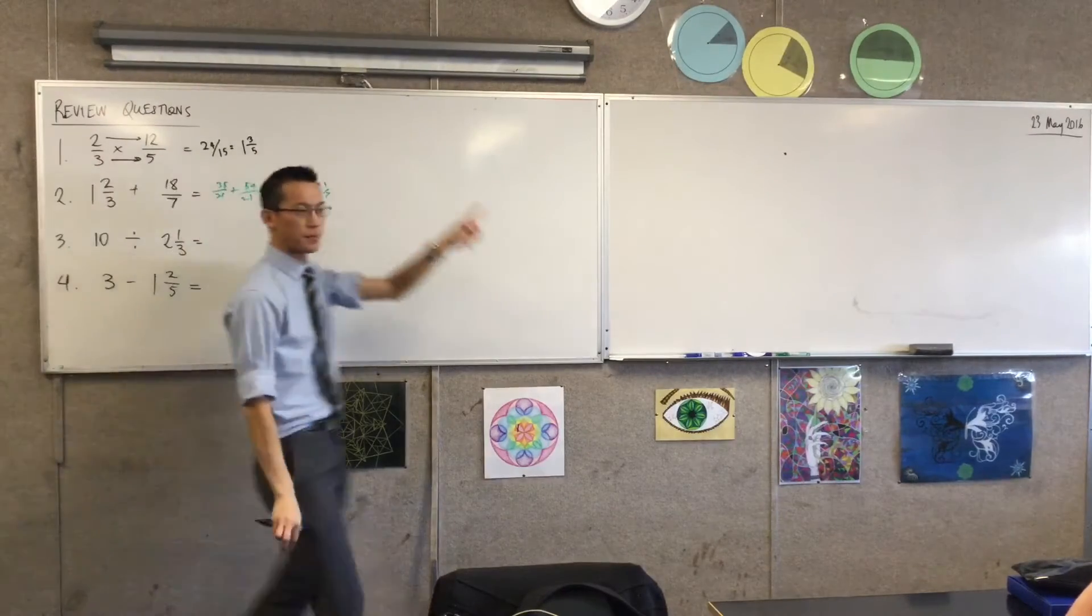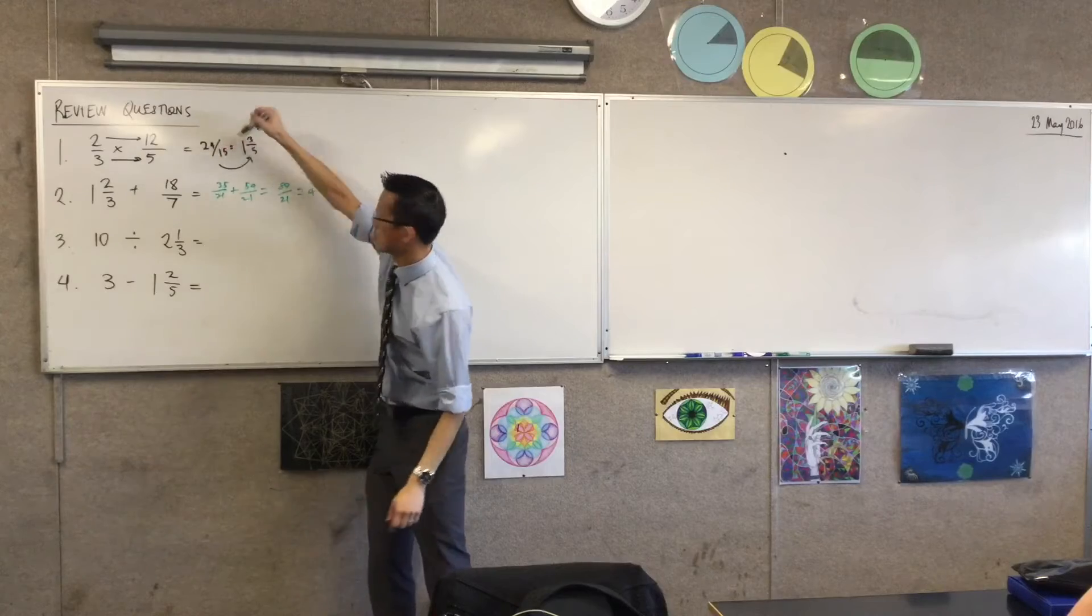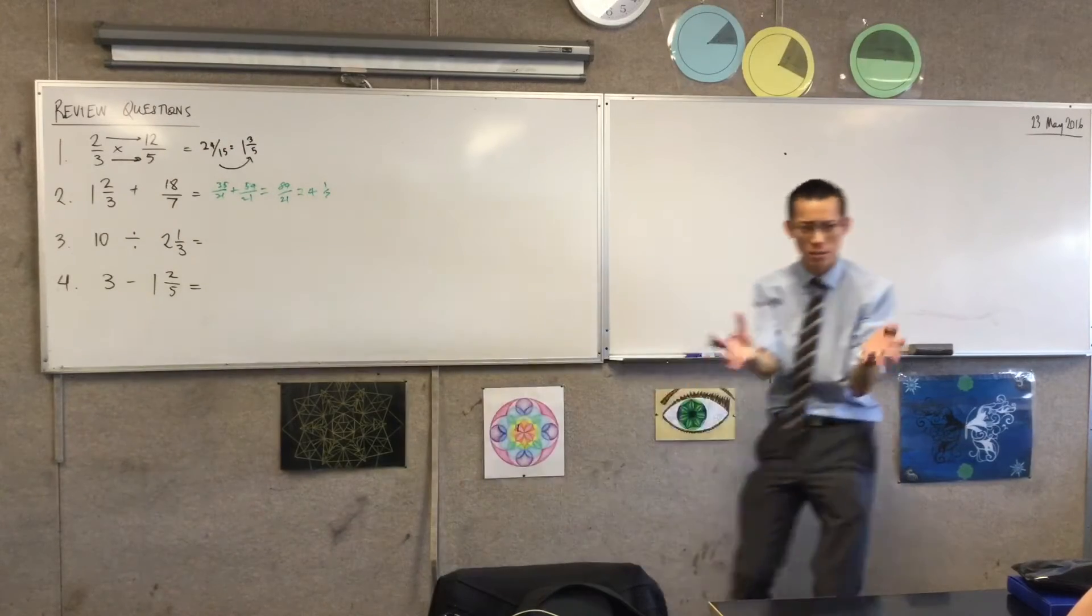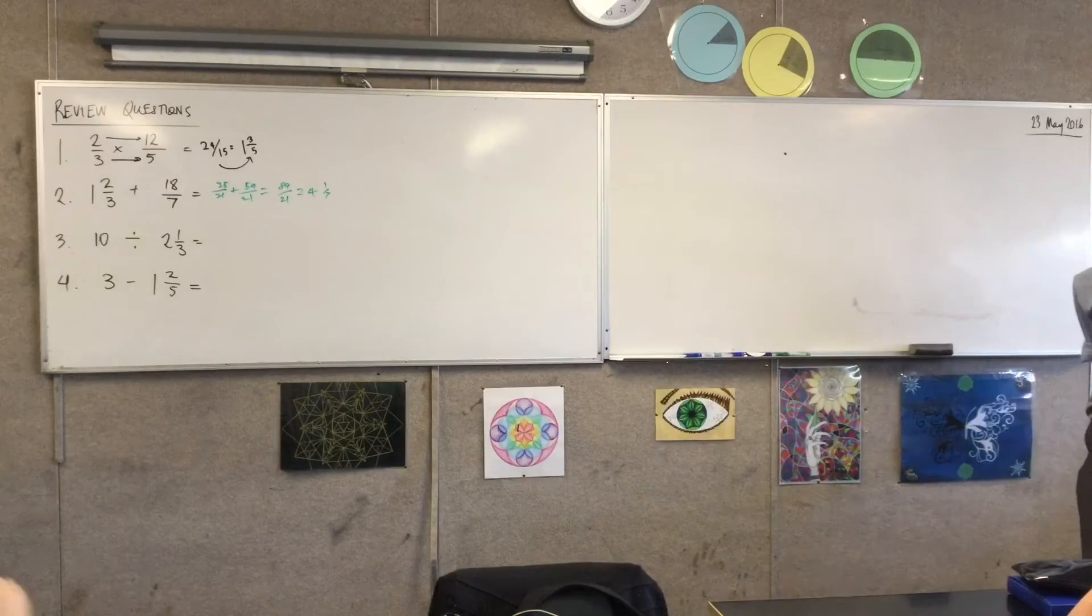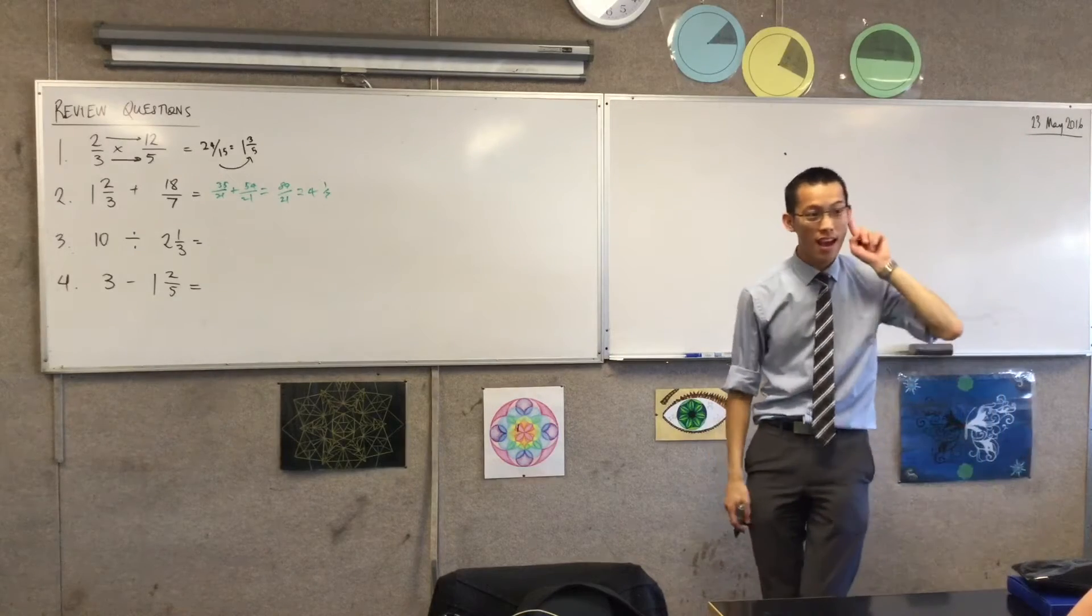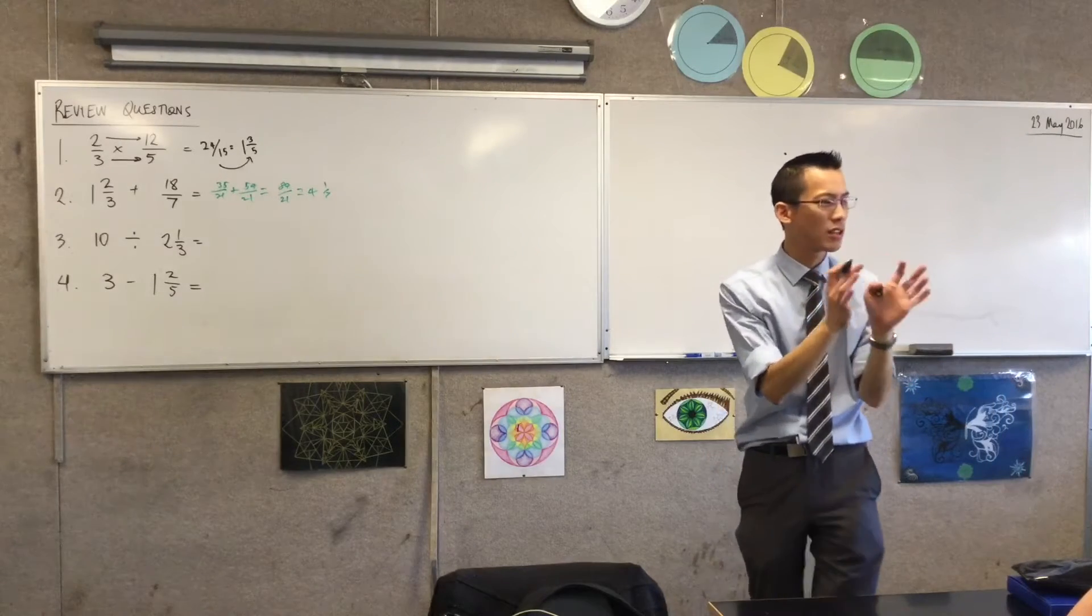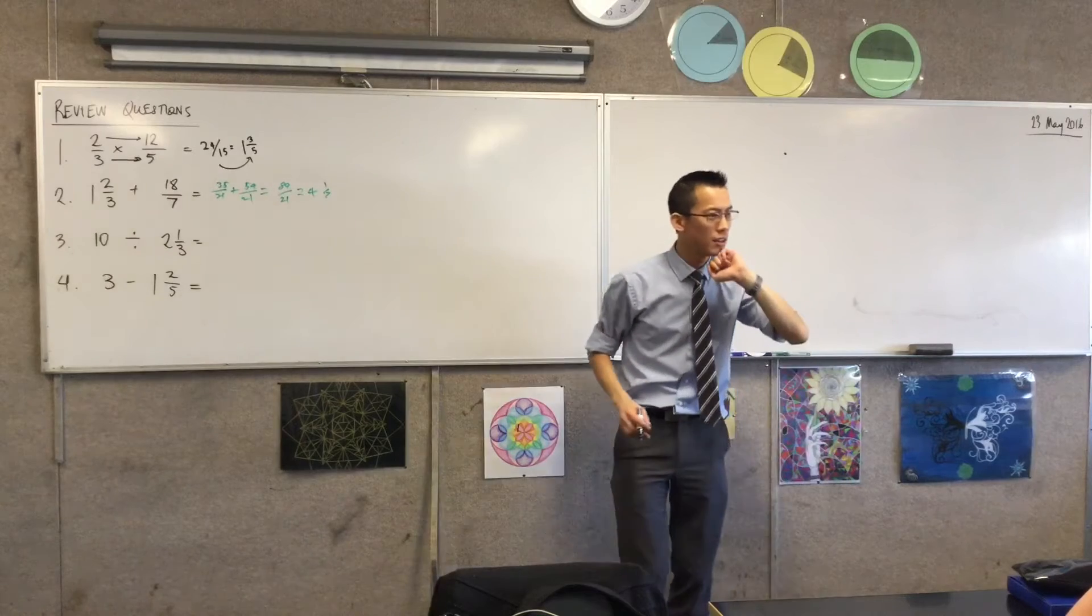He's combining two fractions together. Then what happens? How did he get from this line to this line? What's that about? Someone else, someone else, yeah, Darcy. He is, what he's looking at now?